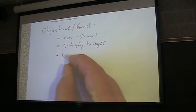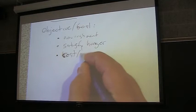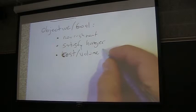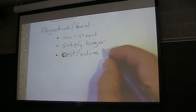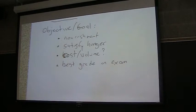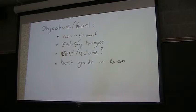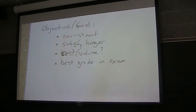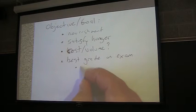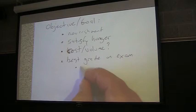Determine the pizza option with the cheapest cost per volume of pizza. Okay. Cost per volume. Is that your objective or is that your measure for your objective? How about this? Best grade on exam. So is it fueling or is it eating for pleasure?